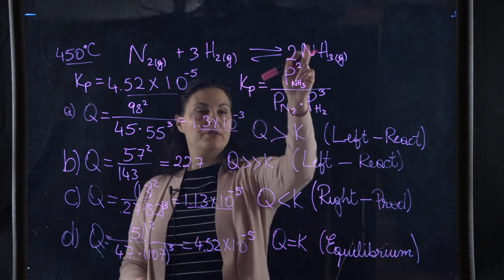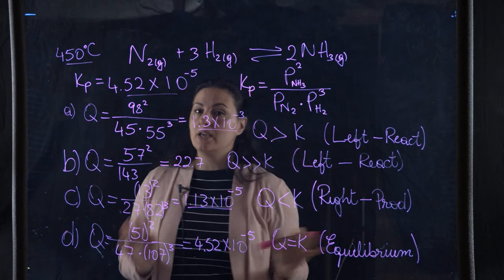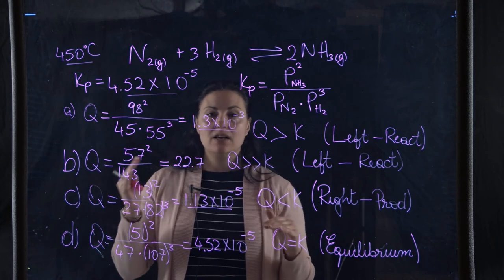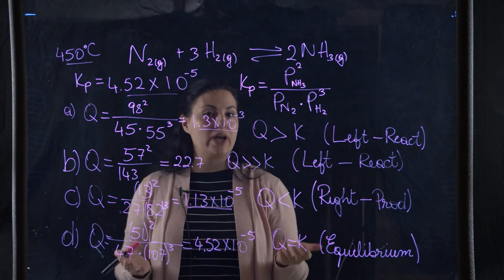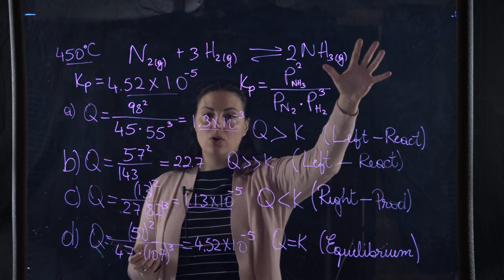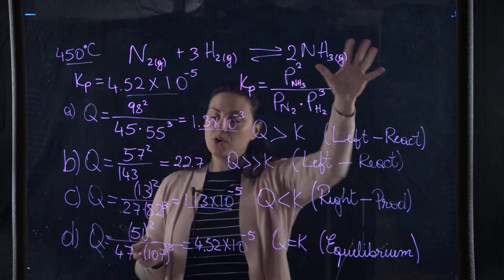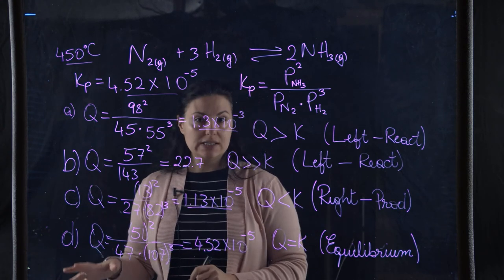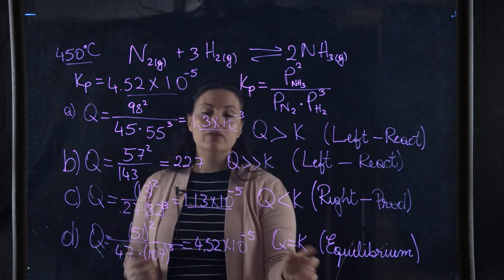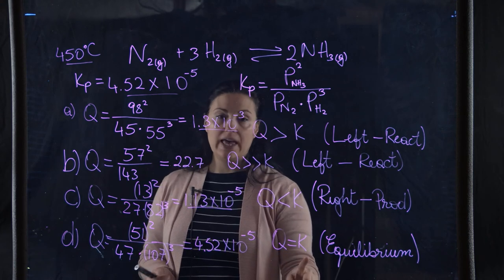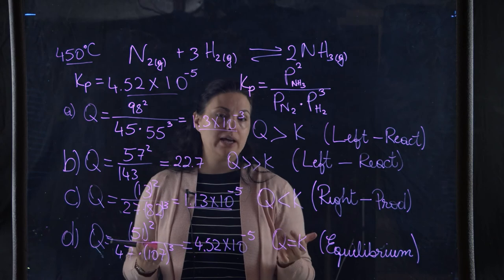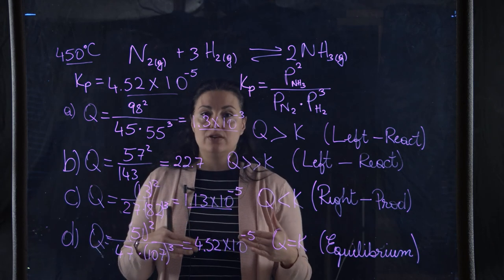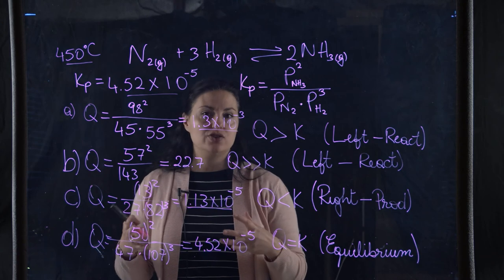When Q equals K, both the forward rate and the reverse rate are equal to each other. The reaction is not going to proceed in either direction — the reactions are still happening simultaneously, but at the same rate. There is no net gain on the product side or the reactant side because the system is at equilibrium.